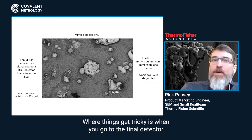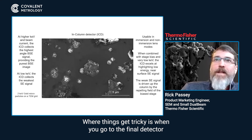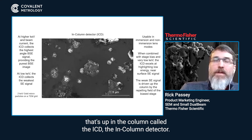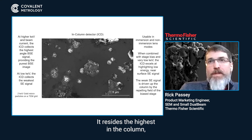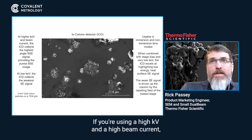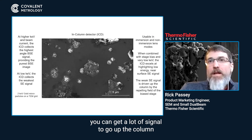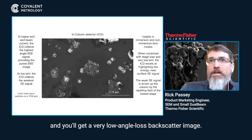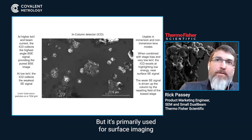Where things get tricky is when you go to the final detector up in the column called the ICD, the in-column detector. It resides the highest in the column and is only impacted by high energy backscatters, so if you're using a high kV and a high beam current, you can get a lot of signal to go up the column and you'll get a very low angle loss backscatter image, but it's primarily used for surface imaging.